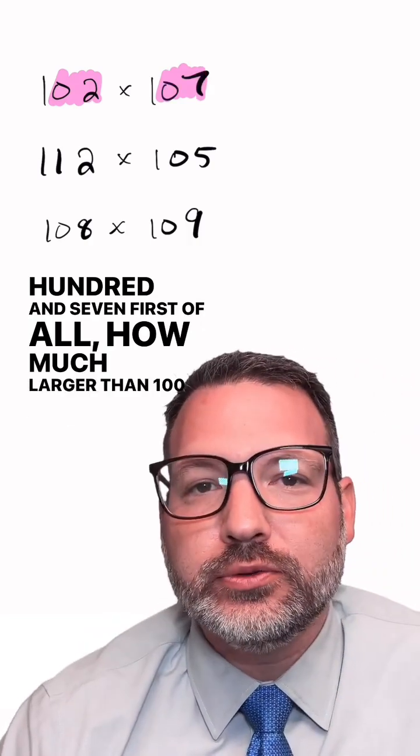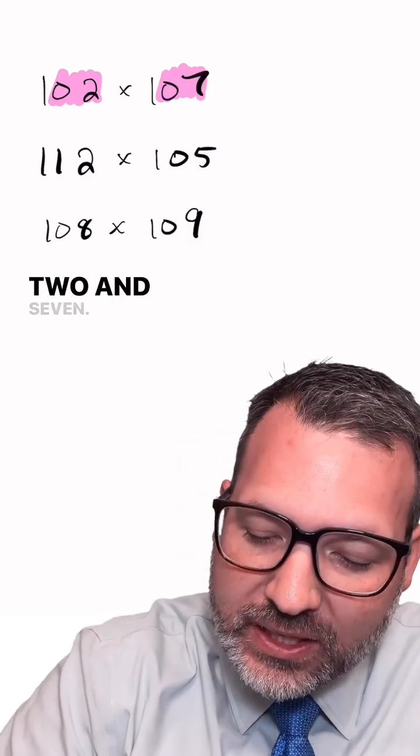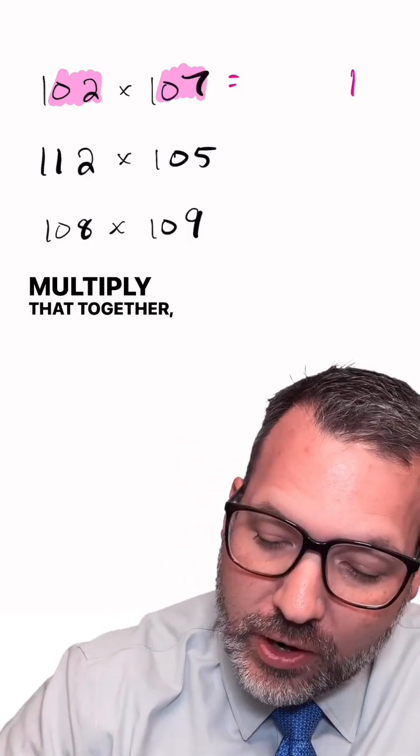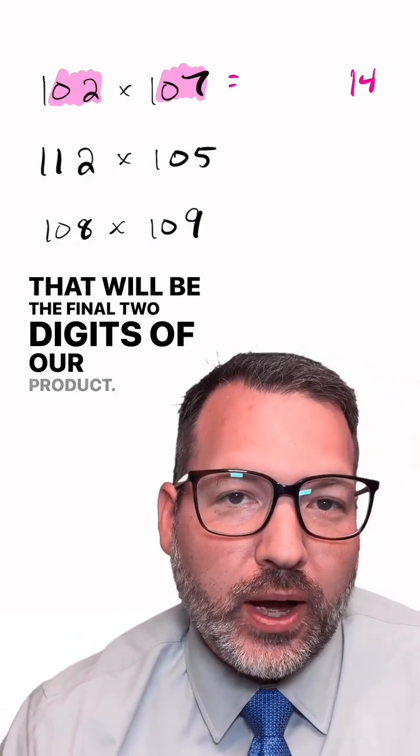First of all, how much larger than 100 are each of these numbers? Two and seven. Multiply that together, you get 14. That will be the final two digits of our product.